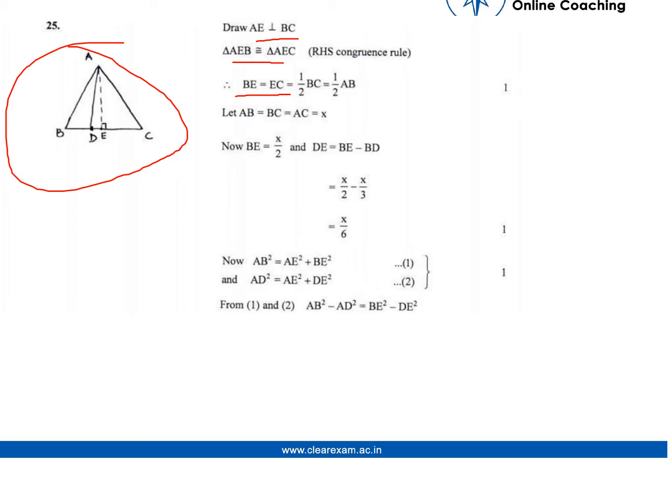Since it is an equilateral triangle, it will be half of AB as well. Now AB, BC, and AC are all equal, and we take that as x.